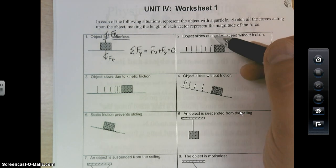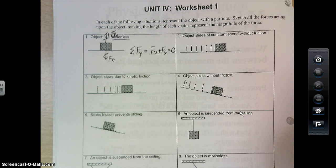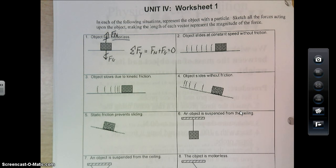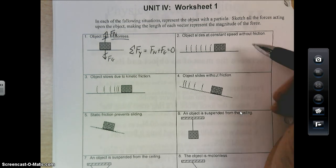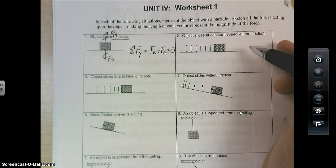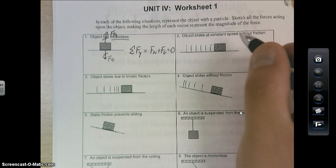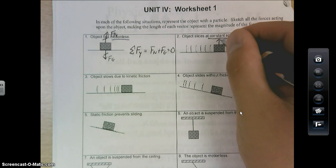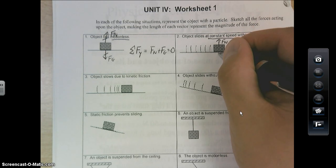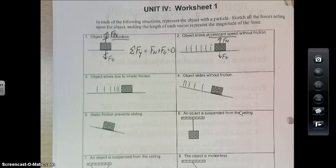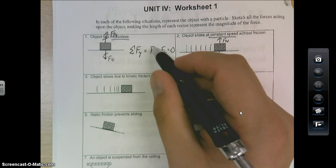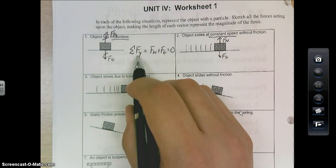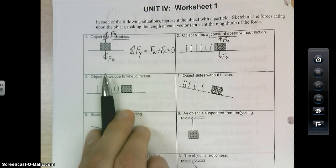On this one, object slides at a constant speed without friction. And this is one that people will oftentimes screw up. This goes back to Newton's first law that says an object in motion stays in motion. So the fact that it's moving at a constant speed indicates that it is still at equilibrium. It's got a constant speed. So the only forces that are acting on this would be a normal force and a gravitational force. And again, the equation for that would look just the same as this. And I used Y here because everything was in the vertical direction.